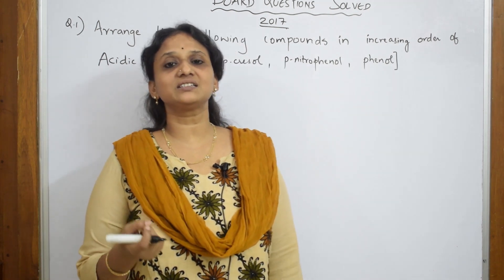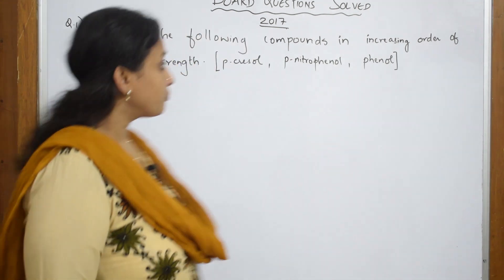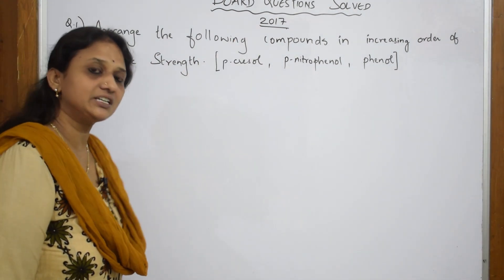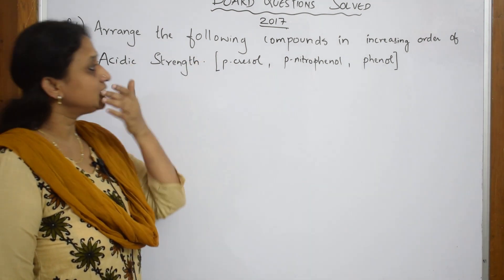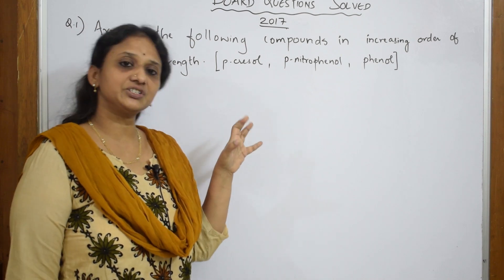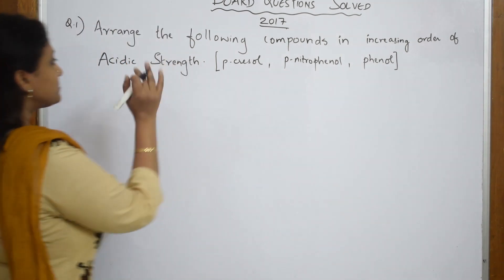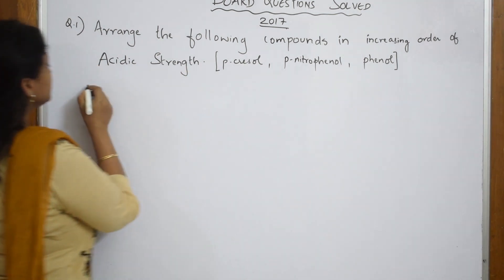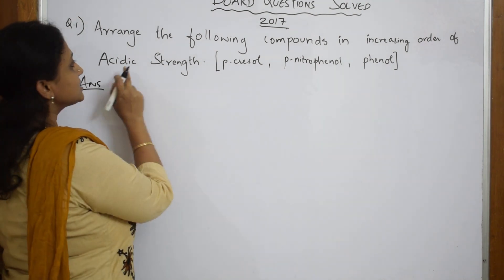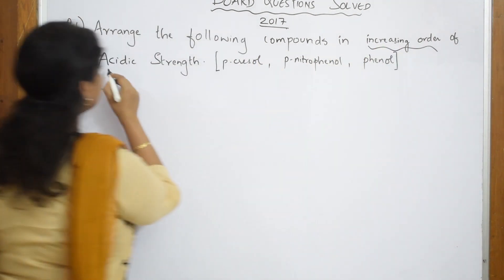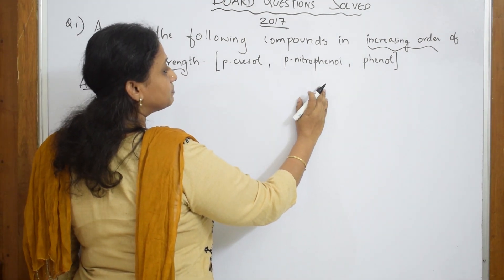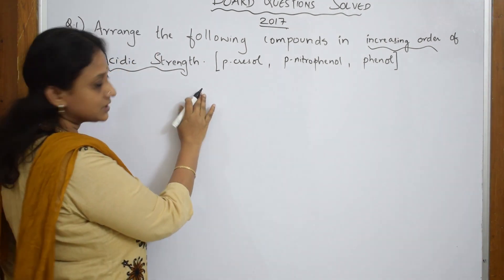Let us start with the first question of the 2016-17 board paper. The question says: arrange the following compounds in the increasing order of acidic strength. Now, as soon as this question is given to you, the increasing order means the maximum, highly acidic compound should be at the end and the least acidic should be at the beginning.